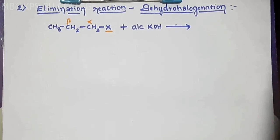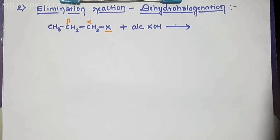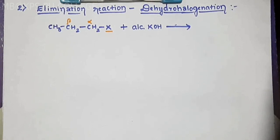During dehydrohalogenation reaction, if more than one type of beta carbon atom is present, hydrogen atom is mostly removed from the beta carbon atom containing the least number of hydrogen atoms. So if we remove hydrogen from this carbon and halogen from here, what product will be formed?